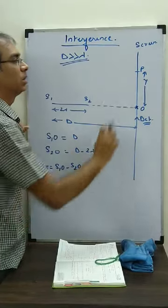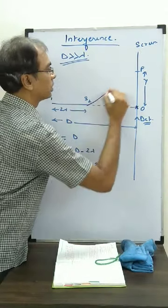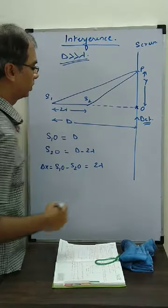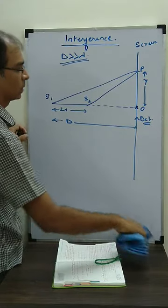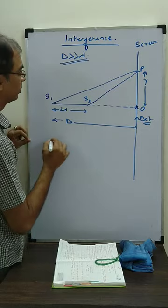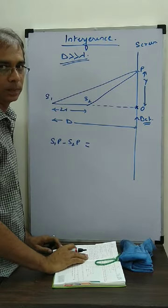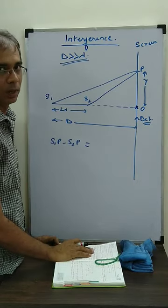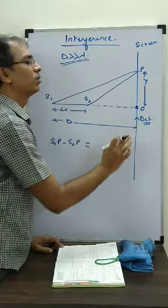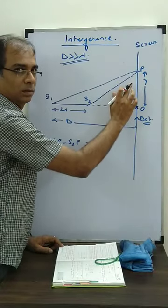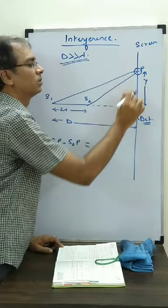Now the question says, how much is Y so that at P also we get constructive interference? Since we want constructive interference at P, we join S1P and S2P. We want constructive interference, so S1P minus S2P should be a whole number multiple of lambda. Since it is 2 lambda at O and we are going upwards, the path difference will be more than 2 lambda, maybe 3 lambda.